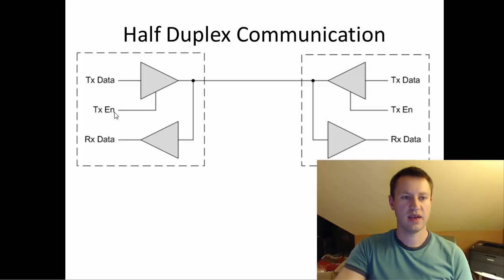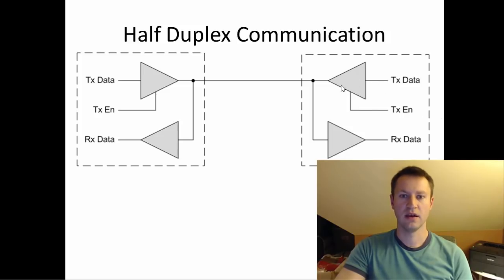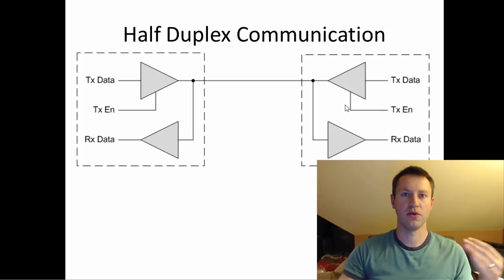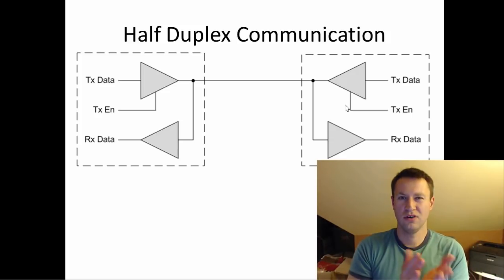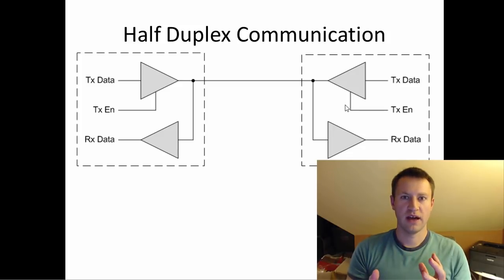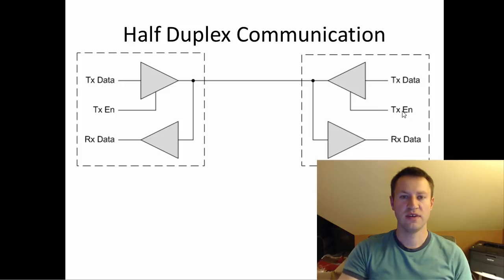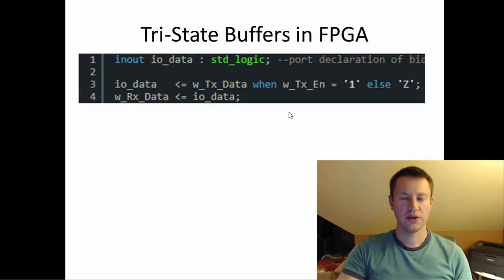There's also a TX enable line — a transmit enable signal for the driver. By default, the master's transmit enable is high (enabled) and the slave's is disabled, so the slave isn't driving any voltage on the wire. If both transmit enables were high simultaneously, you'd have contention on the line — one side trying to drive zero, the other trying to drive one — which could potentially damage a device. So you need to toggle the TX enable based on when you want to be sending or receiving.